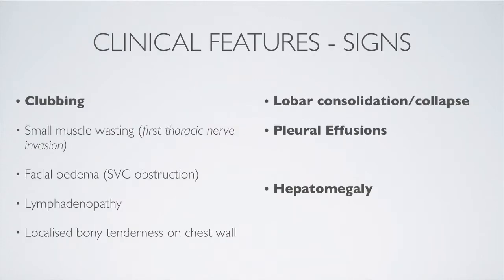When considering the signs of lung cancer, I like to think about the features that I may find on a respiratory examination. Starting at the hands, there may be clubbing of the fingernails. If the first thoracic nerve is involved, there may be wasting of the small muscles of the hand. Moving up the arm to the face, facial oedema may suggest obstruction of the superior vena cava. There may be cervical lymphadenopathy or supraclavicular lymphadenopathy. Feeling the chest, there may be localized bony tenderness secondary to chest wall invasion.